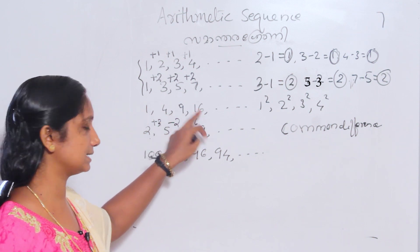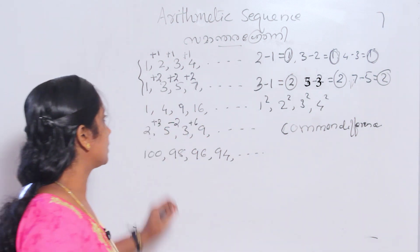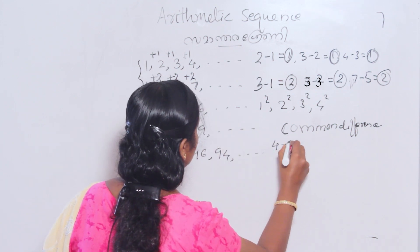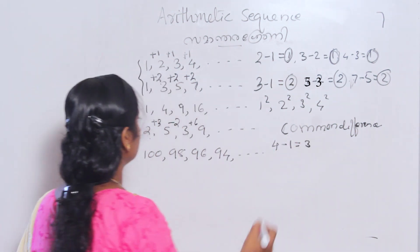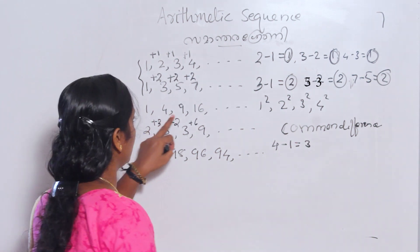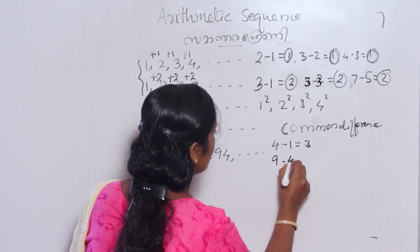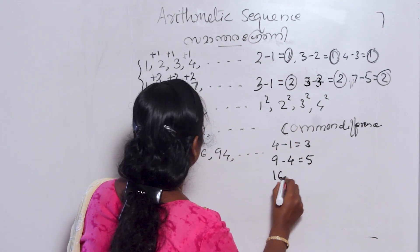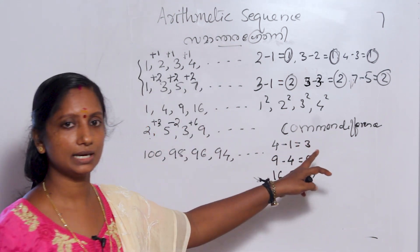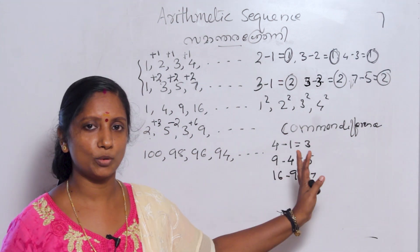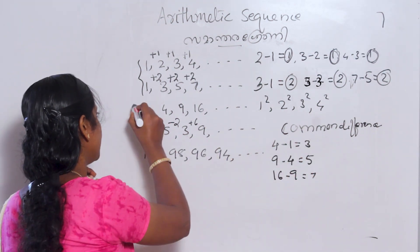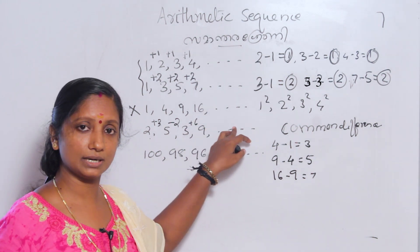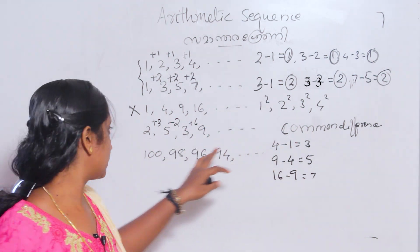Now take the sequence 1, 4, 9, 16. Is this an arithmetic sequence? The second term minus first term: 4 minus 1 is 3. The third term minus second term: 9 minus 4 is 5. The fourth term minus third term: 16 minus 9 is 7. The difference is not constant, so this is not an arithmetic sequence.